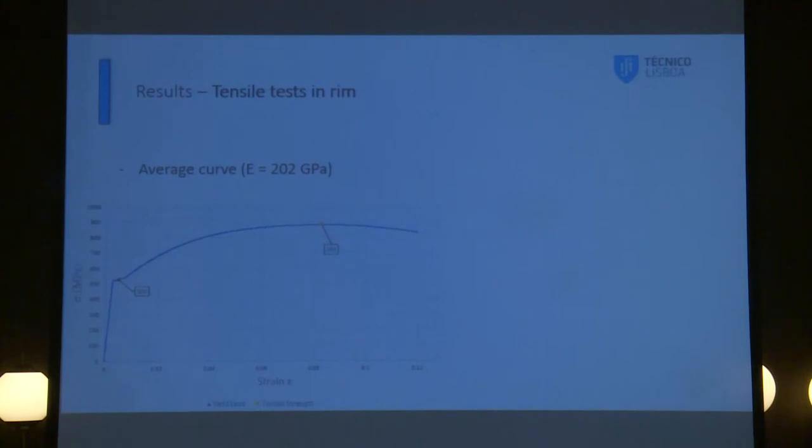Moving to the results. This is just for a reference. For an average curve for the rim. We have made tests for the rim and for the web. This is just an example. The yield stress around 530 megapascals. And here, this is the ultimate tensile stress around 800 megapascals. The microstructure, we have performed some analysis also. It results in a pearlite structure. It was expected. Nothing else more.